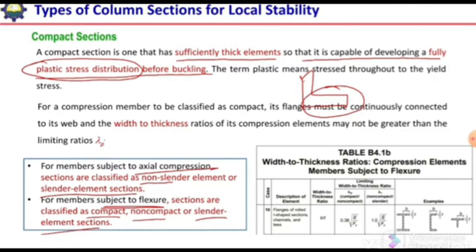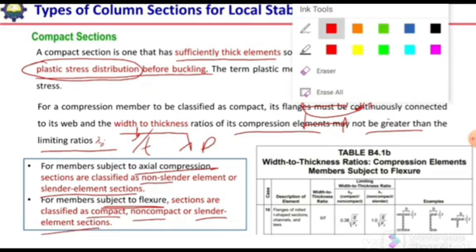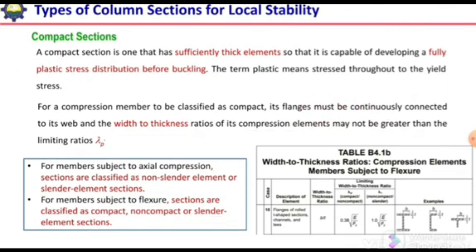For a compression member to be classified as compact, its flanges must be continuously connected to its web and the width-to-thickness ratio of its compression elements may not be greater than the limiting ratio λp. The b/t ratio of the element should be less than λp. If this condition is met, we can classify it as a compact section.